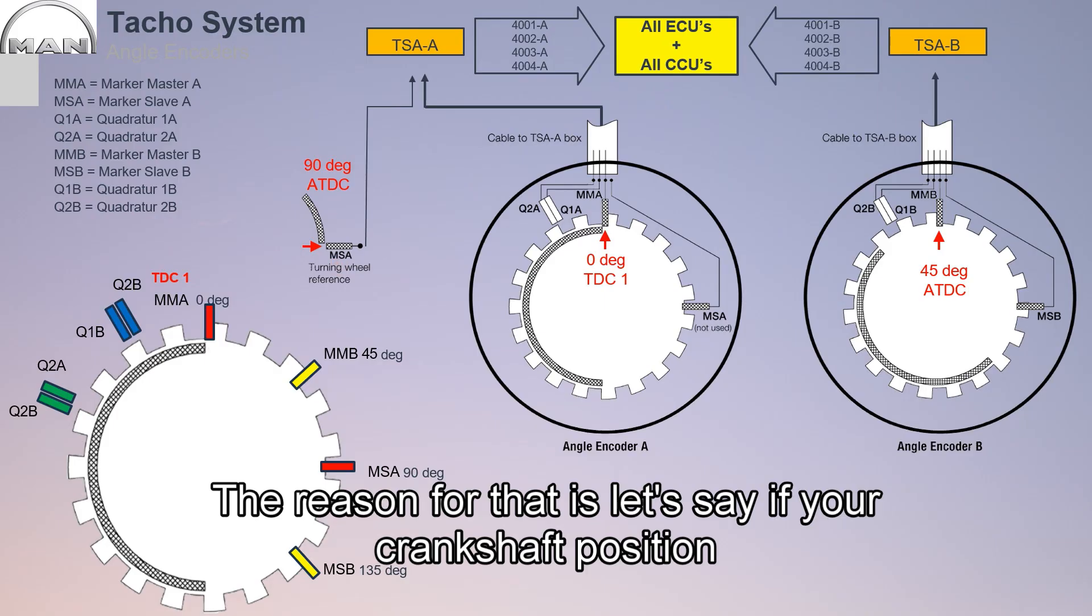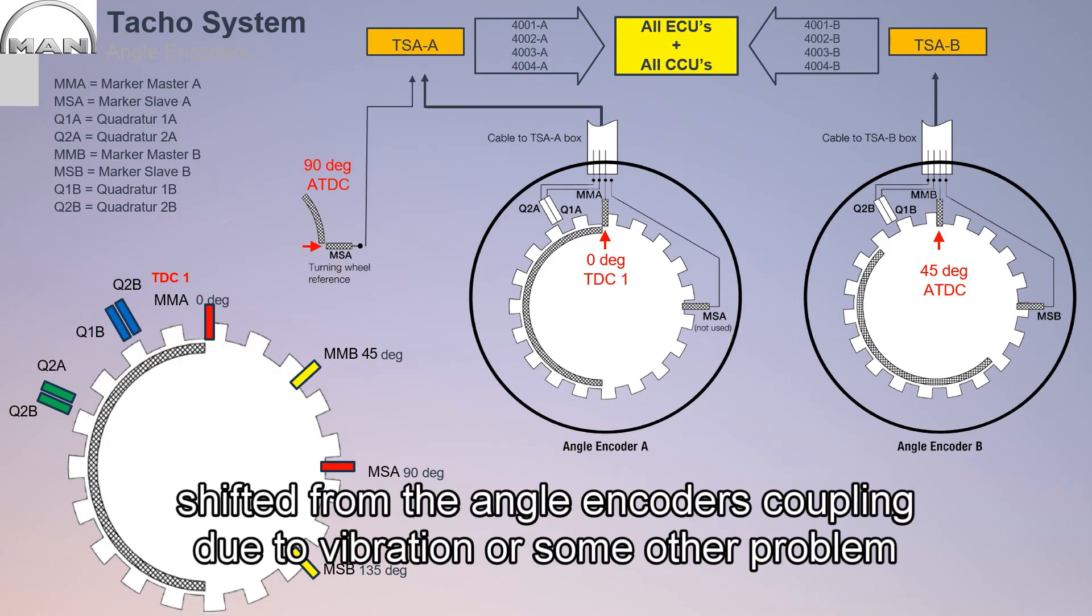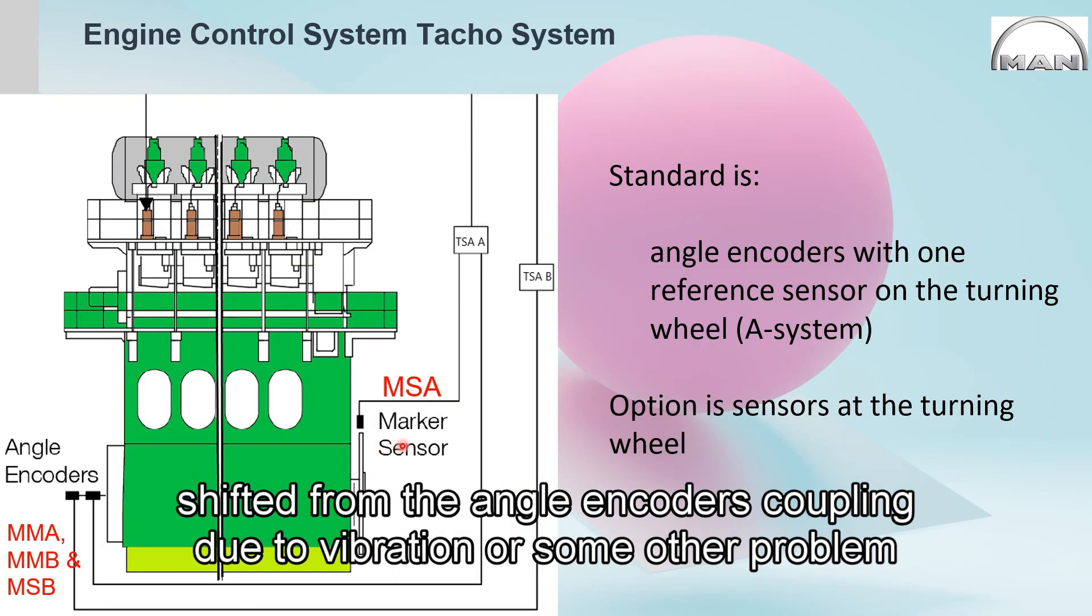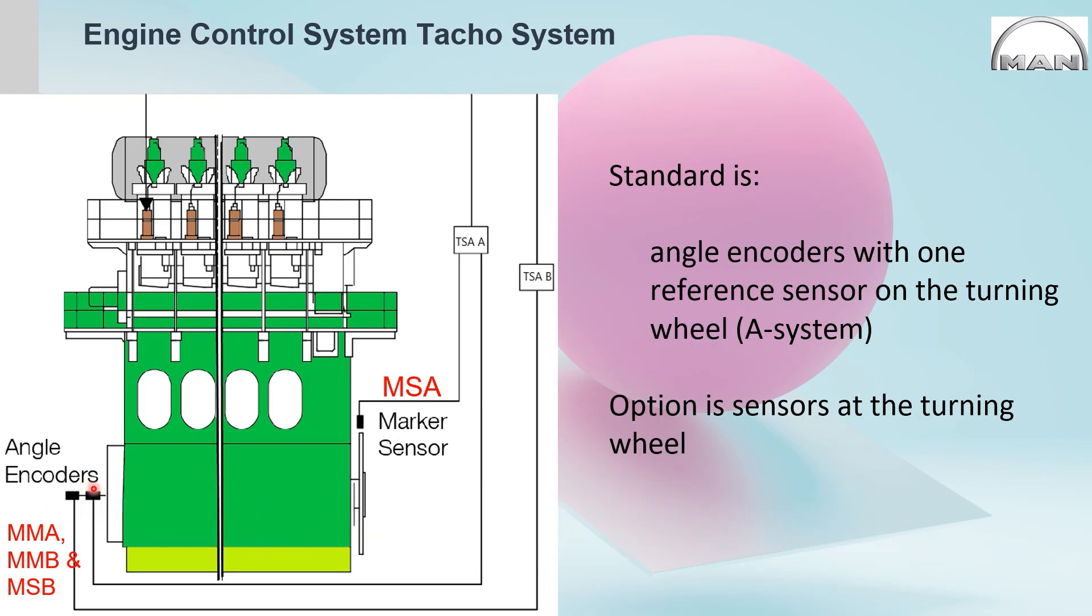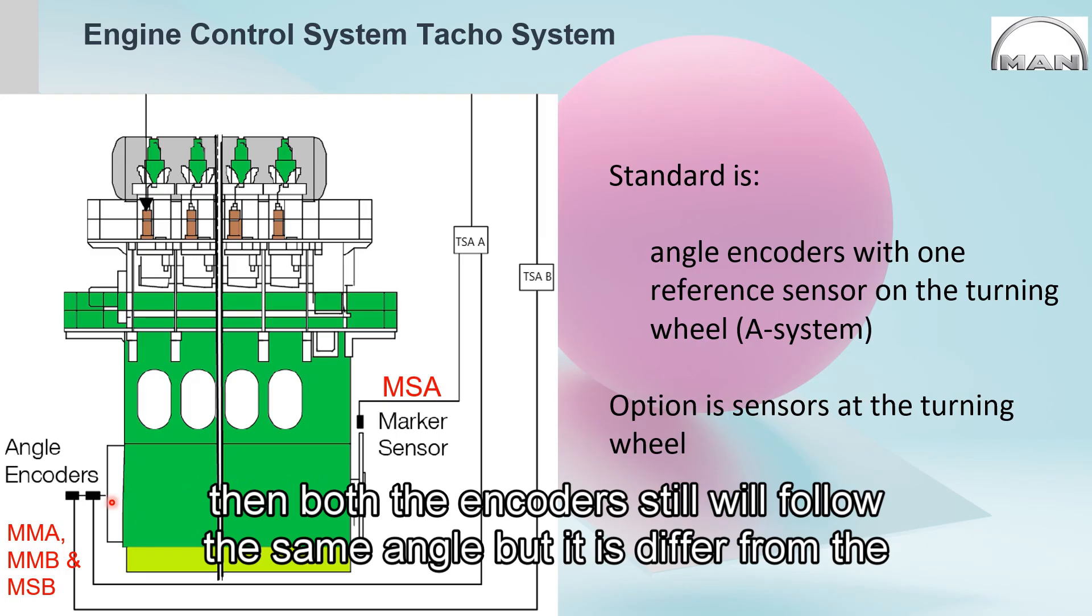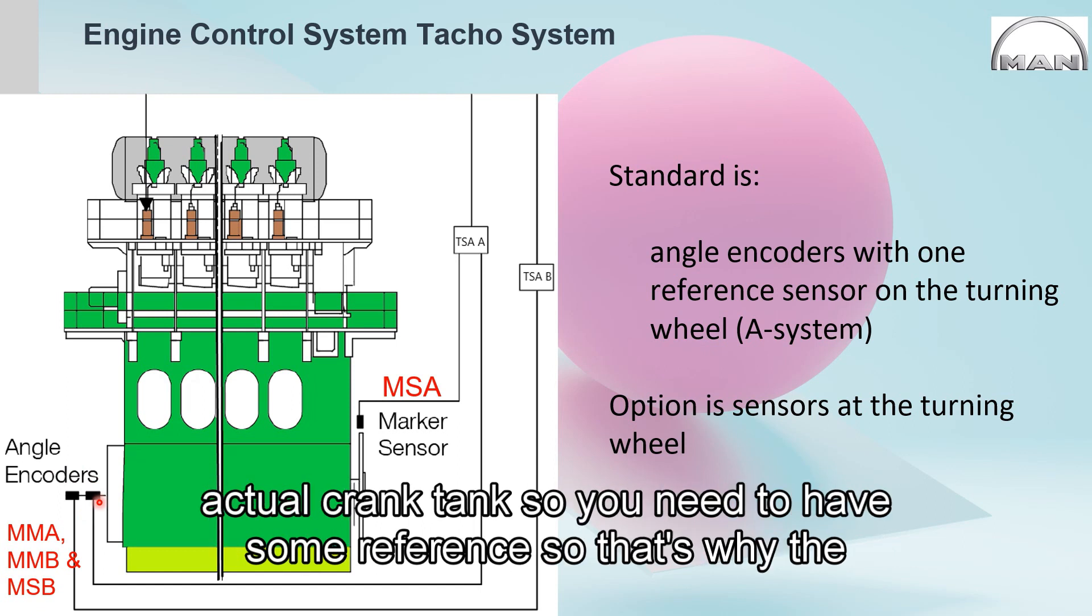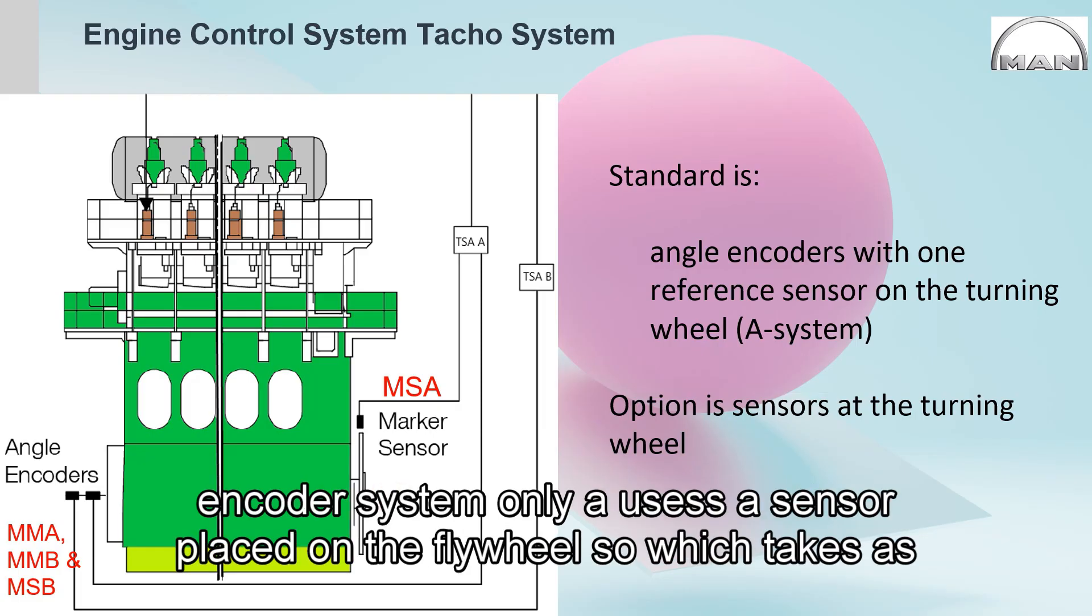The reason for that is, let's say if your crankshaft position is shifted from the angle encoder's coupling due to vibration or some other problem, then both encoders still will follow the same angle, but it differs from the actual crank position.